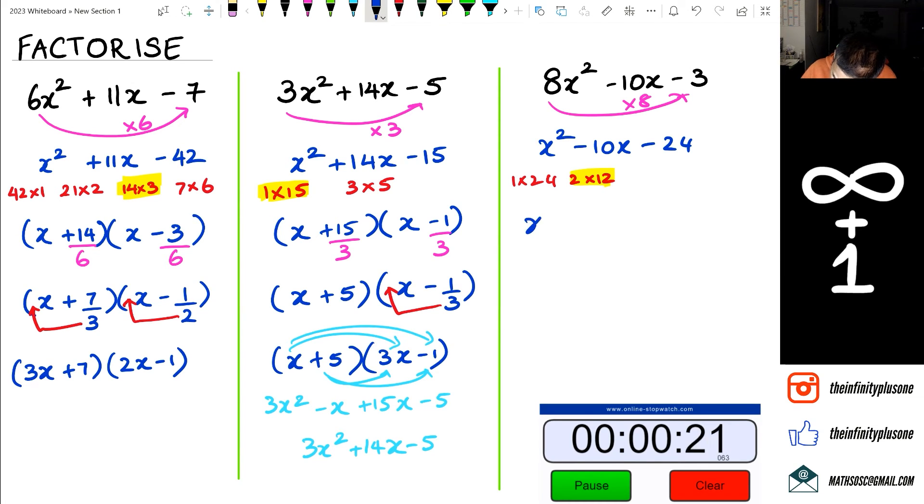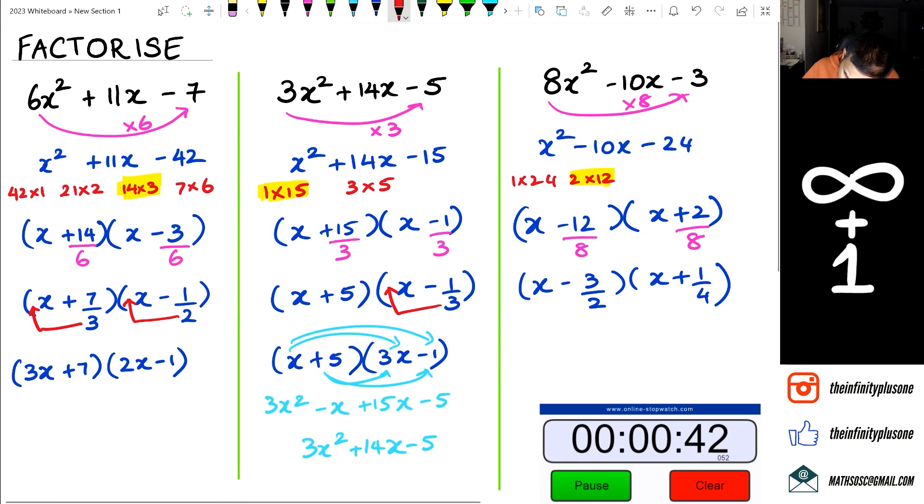So then I can actually say x minus 12, x plus 2, divide everything by 8. So that's divided by 8, divided by 8, then I'm gonna have x minus what is this going to be 3 over 2 and then x plus 1 over 4 of course.